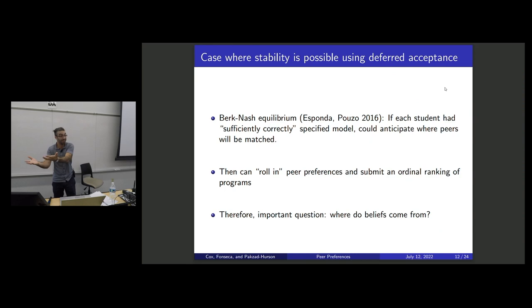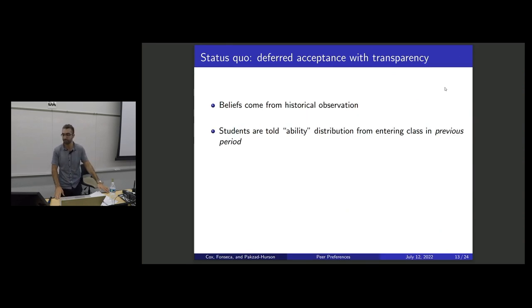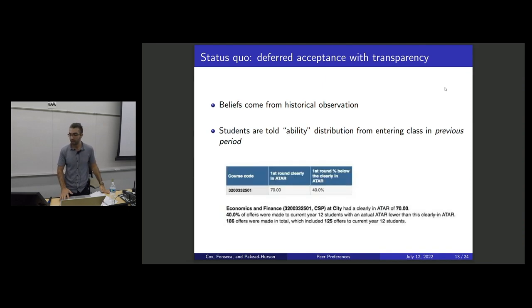So the question really does the beliefs matter? Where do the beliefs come from? And this is where the learning from the past comes from. Students learn the ability distribution of students in the previous period. And here's an example in this New South Wales market. It's by law. They have to show some summary statistics. This is a very salient piece of information. We can see the students learn from this.